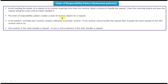The third explanation: in this pattern, normally each receiver contains a reference to another receiver. If one receiver cannot handle the request, then it passes the same request to the next receiver and so on. The fourth and final explanation: one receiver in the chain handles the request, or one or more receivers in the chain handle the request.